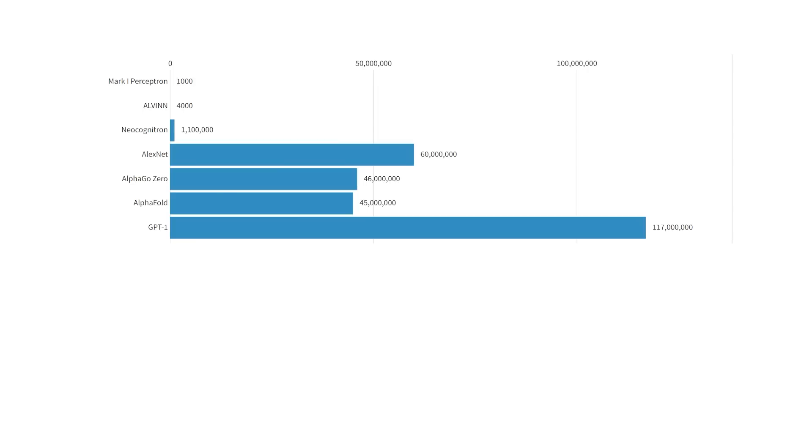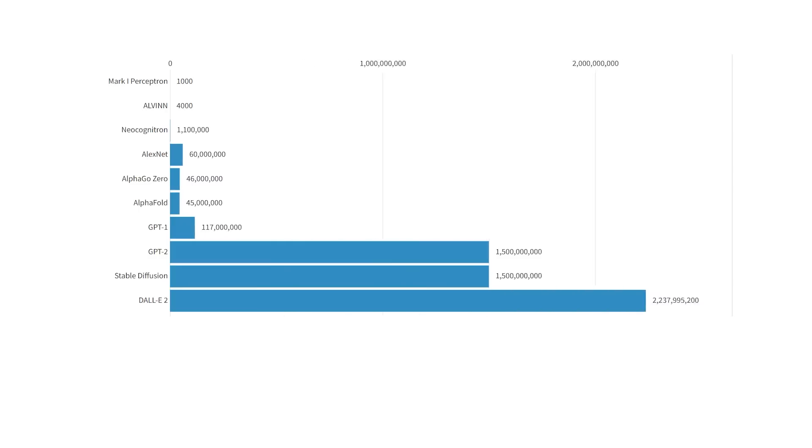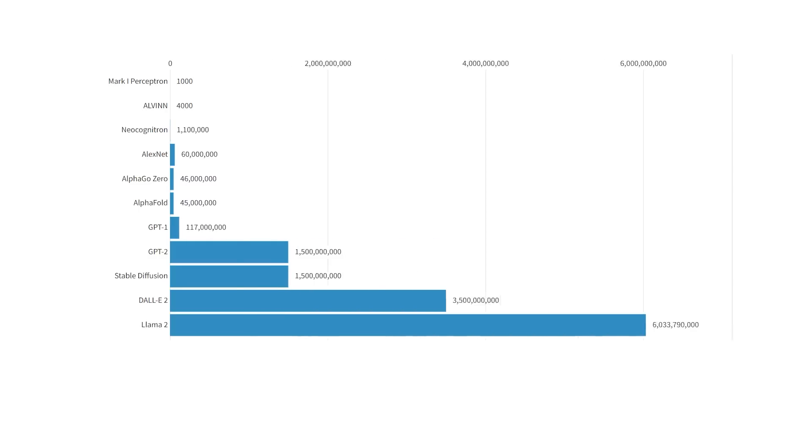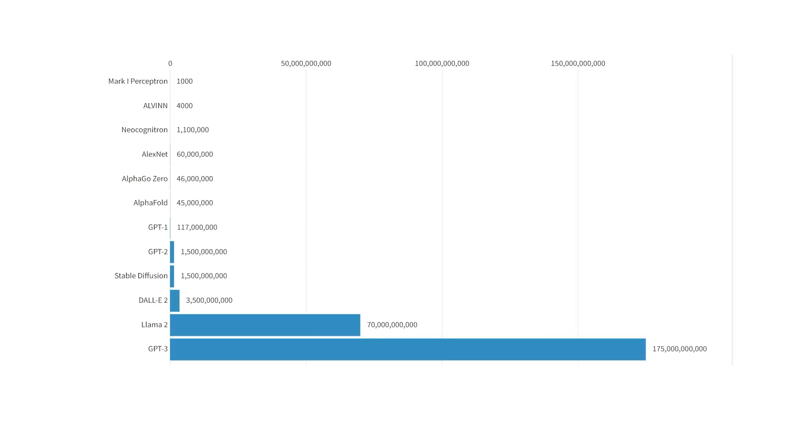The first GPT, a large language model, has 117 million parameters. GPT-2, the second version of the large language model, and StableDiffusion, which generates images, both have around 1.5 billion parameters. DALI-2, another image generator, has 3.5 billion parameters. LAMA-2, another large language model, has 70 billion parameters. And finally, GPT-3 has 175 billion parameters.